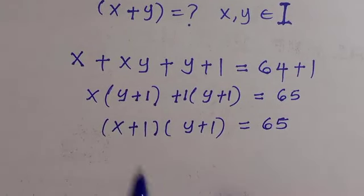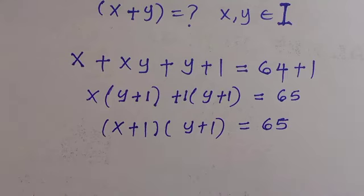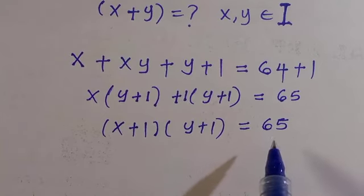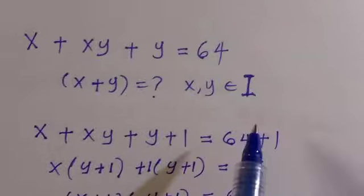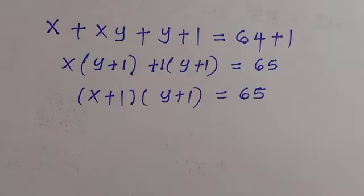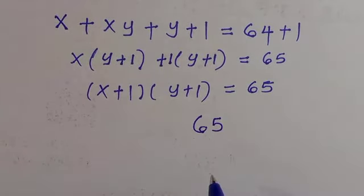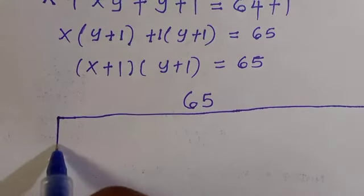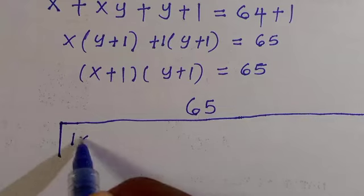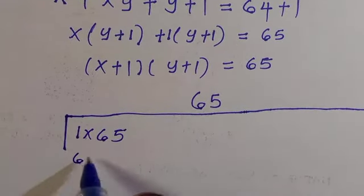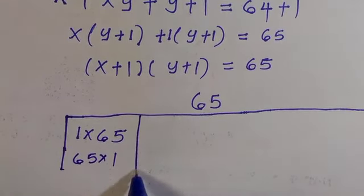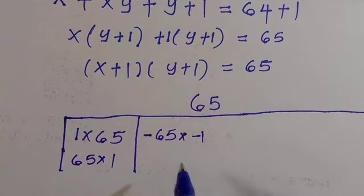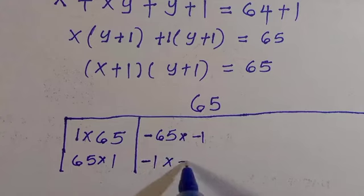To get the values of x and y, we have to consider all the factors of 65. Those factors must be members of the integers. The possible factor pairs for 65 are: 1 times 65, 65 times 1, negative 65 times negative 1, and negative 1 times negative 65.